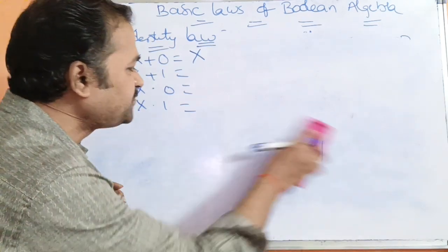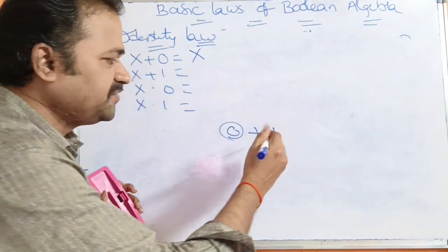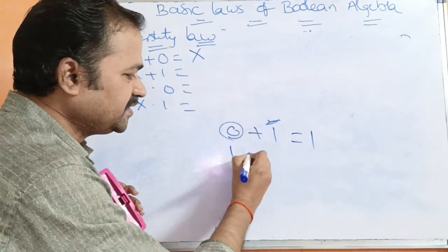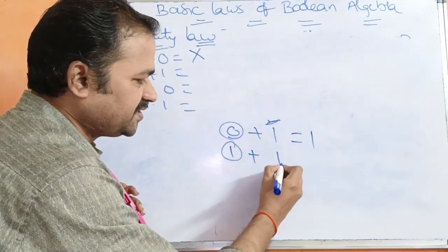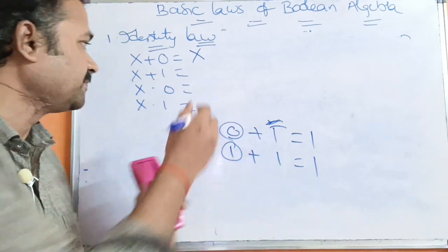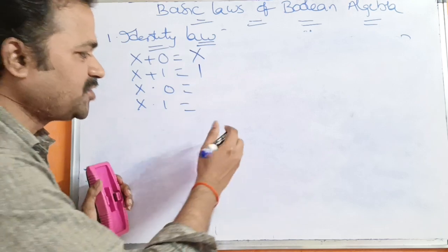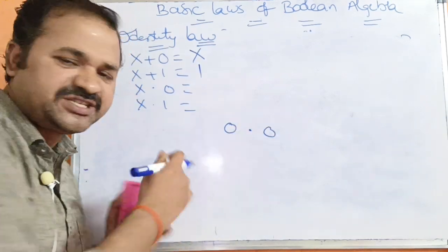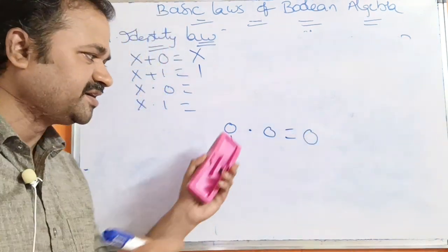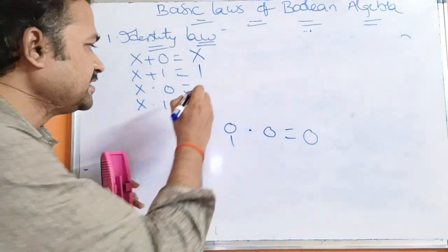Next, x plus 1: if x is 0, then 0 plus 1 equals 1. If x is 1, then 1 plus 1 equals 1. So if we add 1 to any variable, the result is always 1. Next, x dot 0: if x is 0, then 0 dot 0 equals 0. If x is 1, then 1 dot 0 equals 0. So if we perform AND operation with 0, the result is always 0.